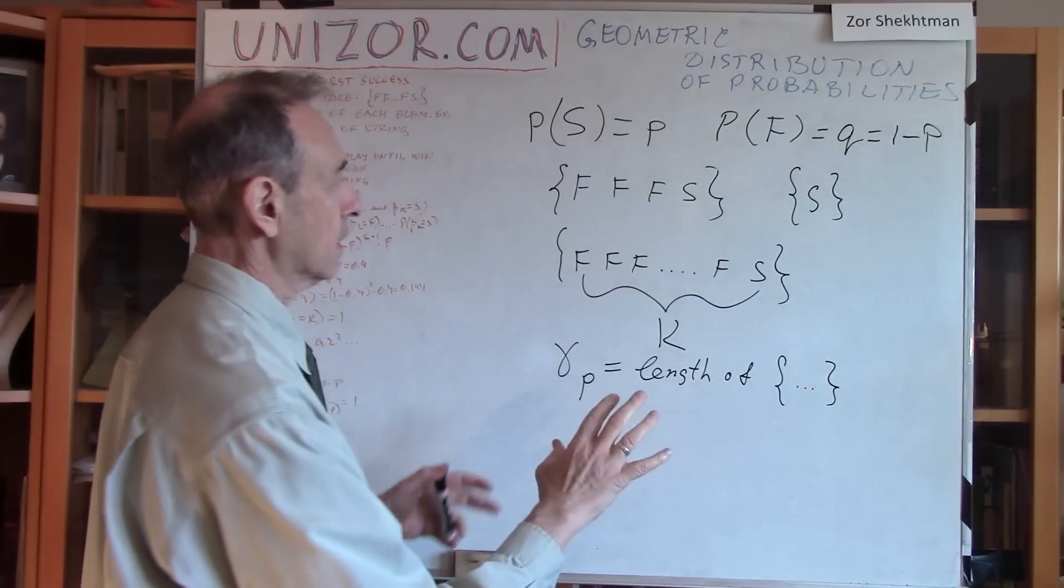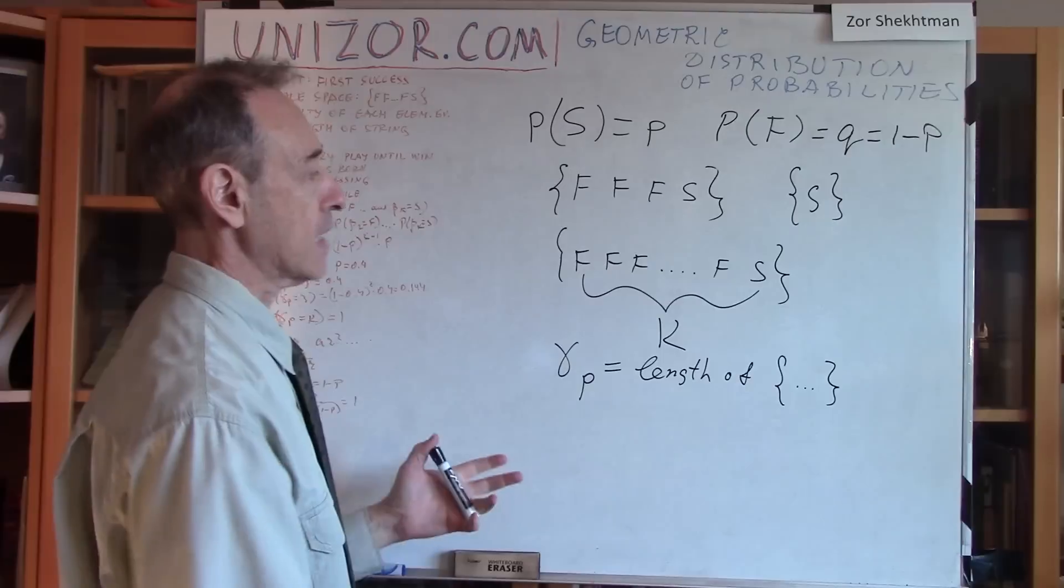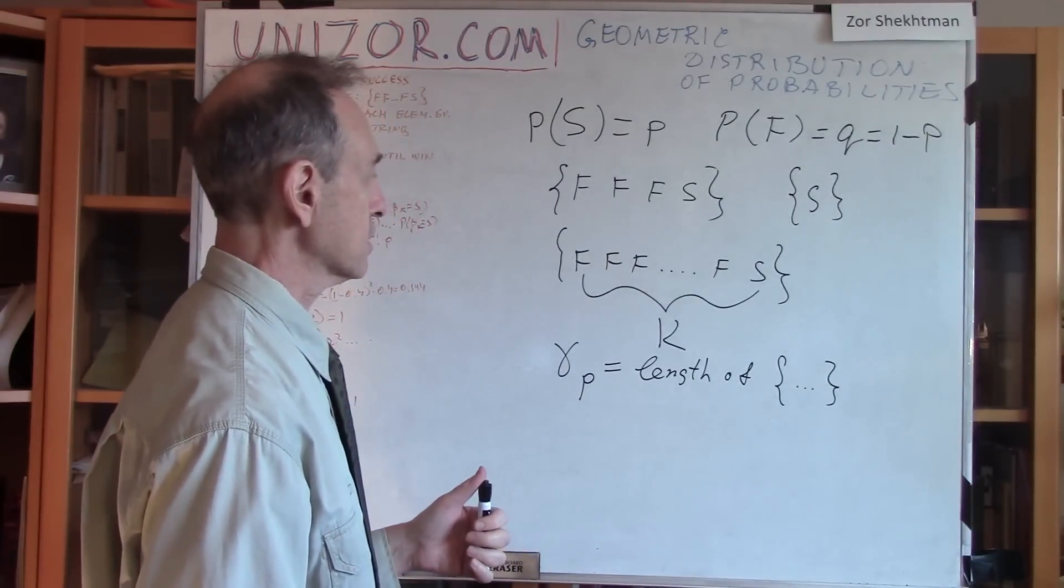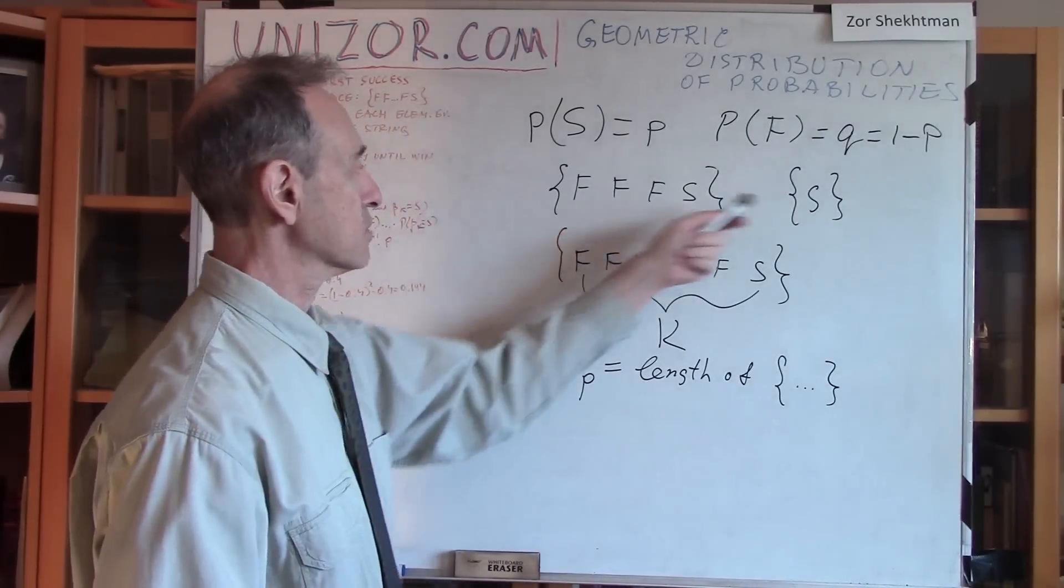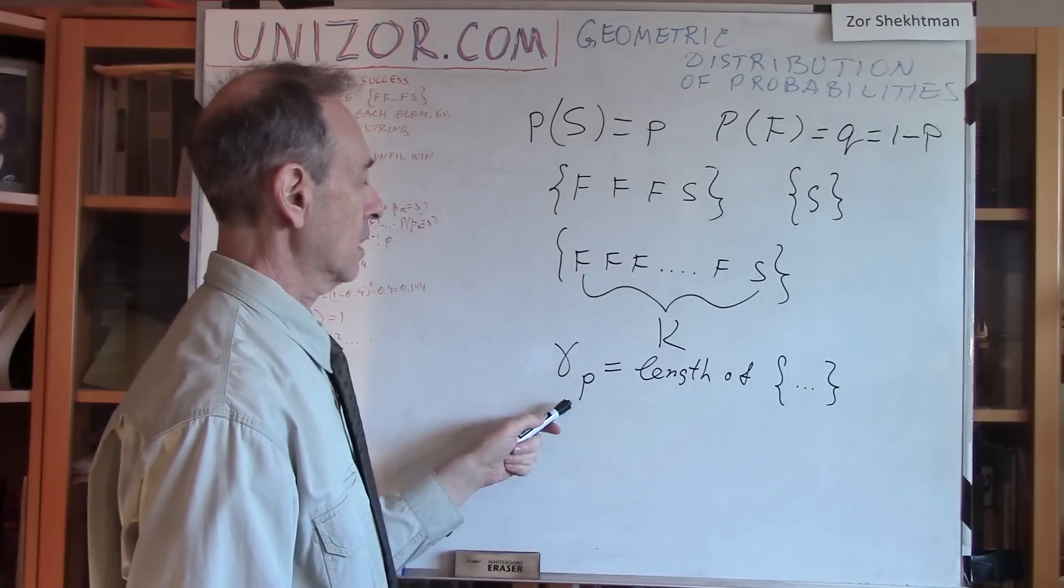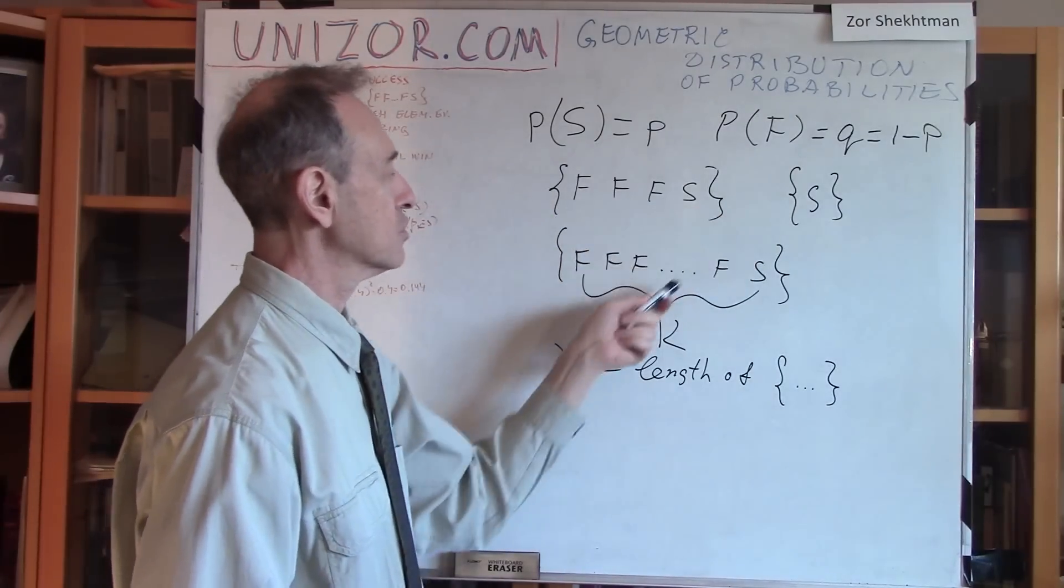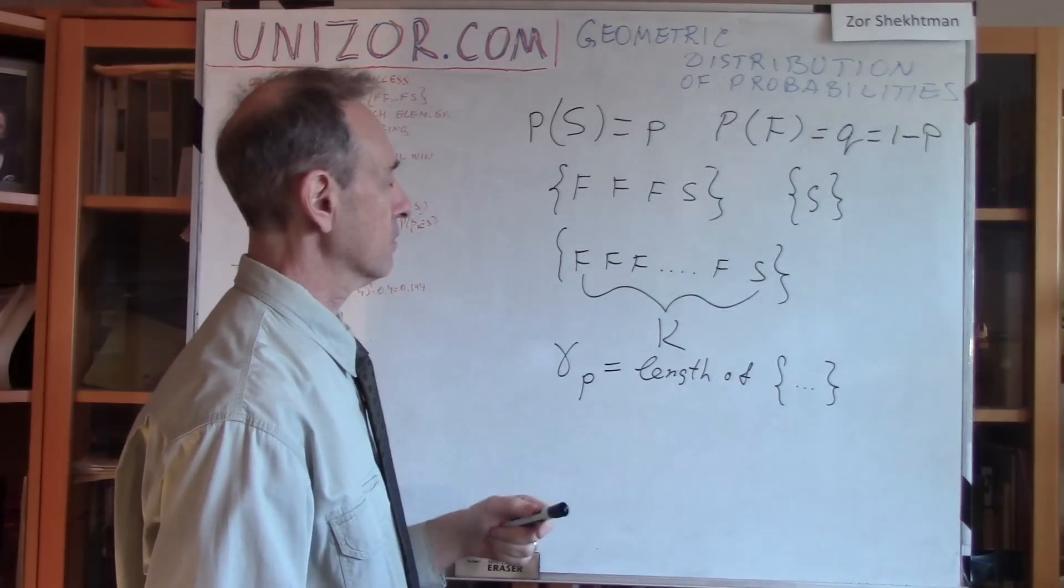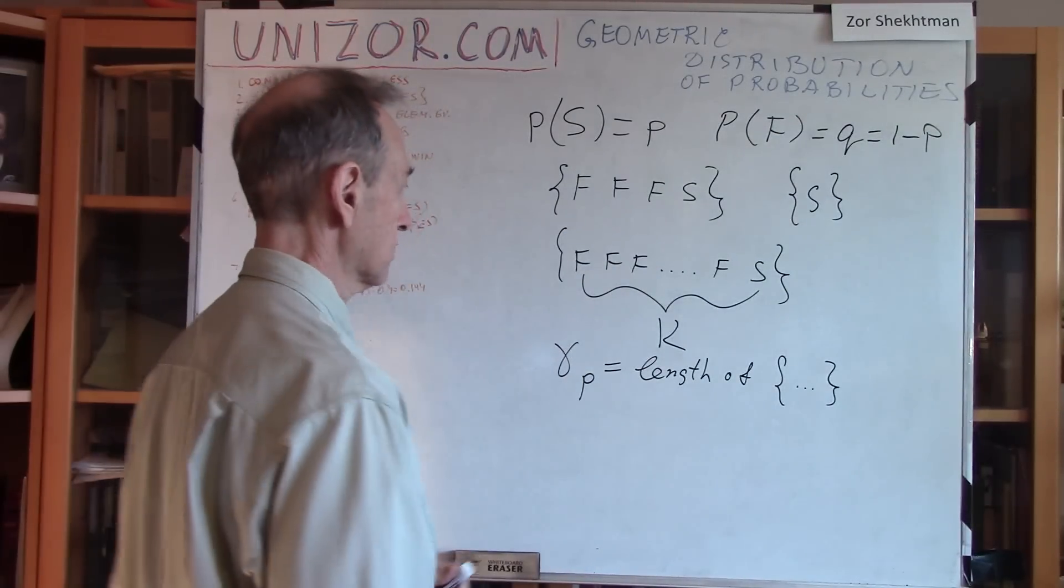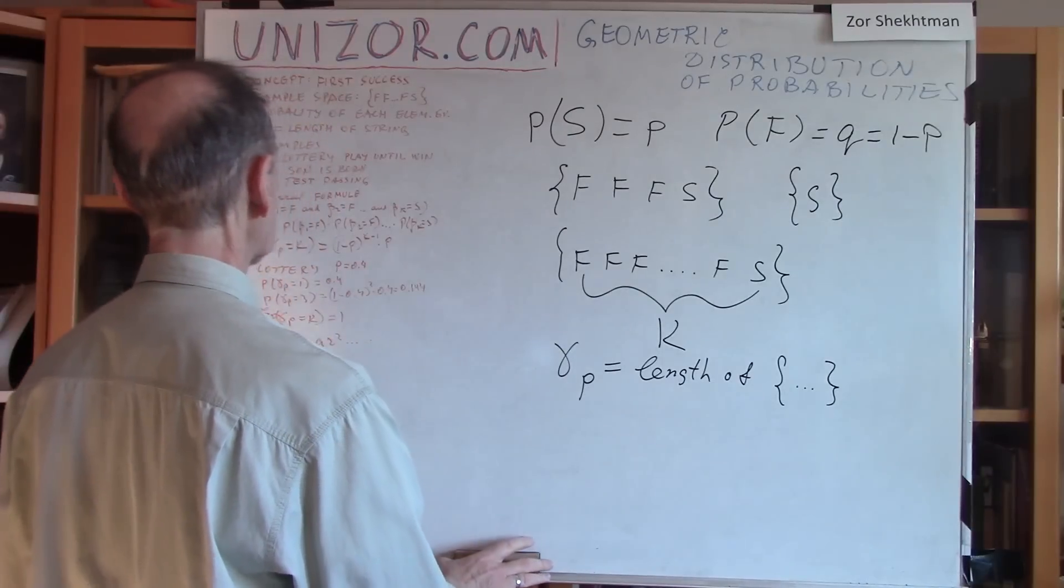Alright, so that's basically an explanation of what the geometric distribution of probabilities is. It's either distribution between the probabilities of these events or distribution of the random variable defined on each of these elementary events as the length of the corresponding string. Let's get to some examples.